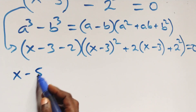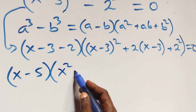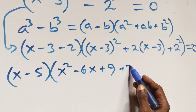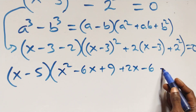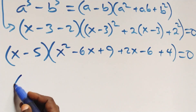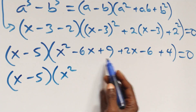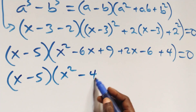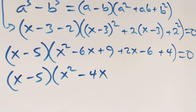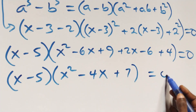At this here, this becomes: x minus 5, into bracket, open bracket, expansion here gives us x square, minus 6x, plus 9, then plus 2 times x minus 3, that is plus 2x, minus 6, and plus 2 squared. This simplifies to x minus 5, into bracket, x square, minus 6x, plus 2x giving minus 4x, then minus 6 plus 4 that's minus 2, and plus 4, close bracket, equals to 0 here.